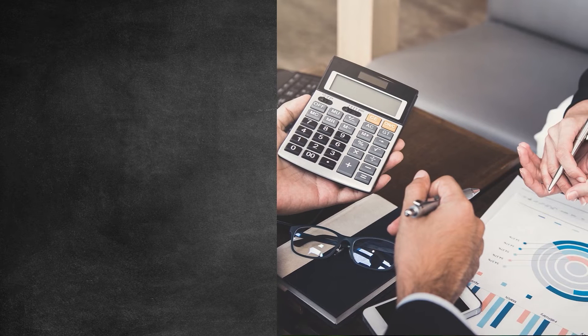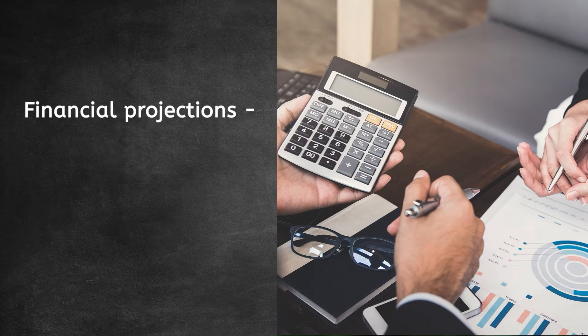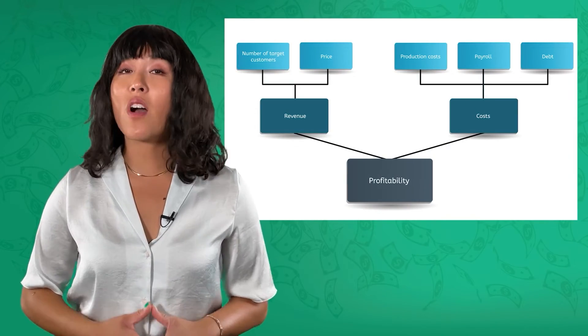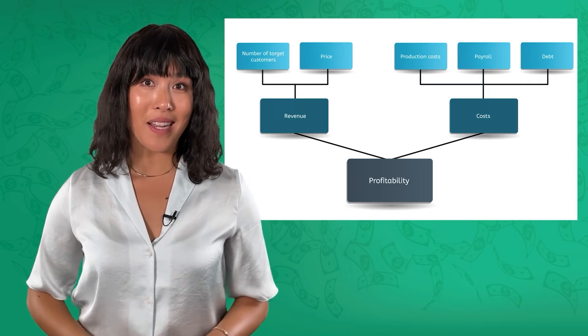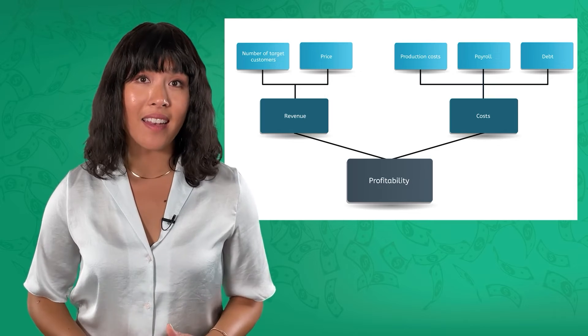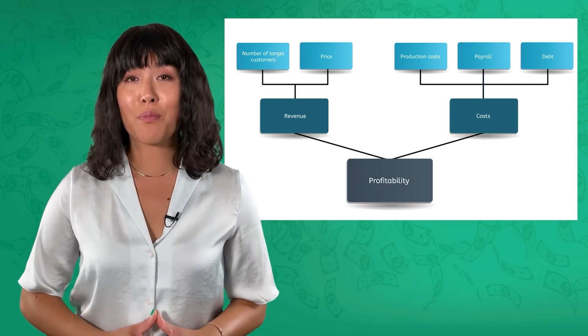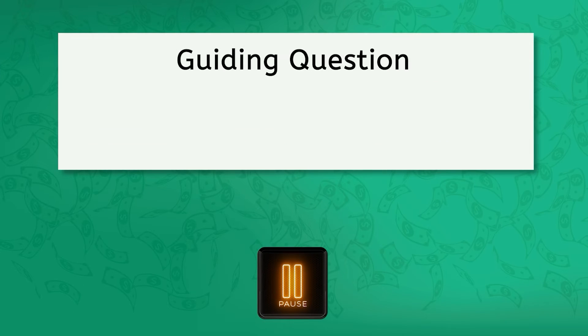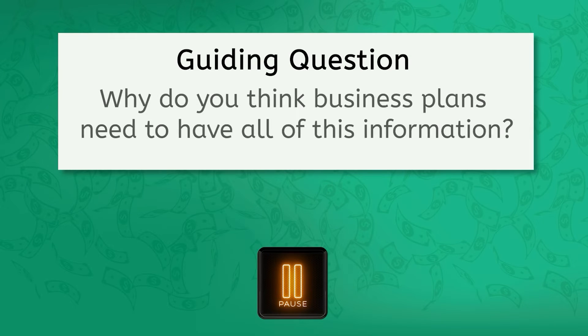Finally, you're going to include your financial projections. This is the section where you bring all of the information together to show the potential profitability of your business. You try to project revenues based on the number of target customers and the sales price. Then you consider your costs from production to payroll to paying back debt. This allows you to project when you should start turning a profit and what that profit might look like. Okay, I know that was quite a bit of information, but let's take a minute to answer a quick question. Why do you think business plans need to have all of this information?